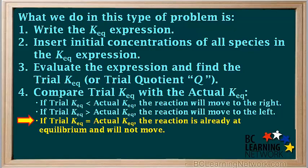Now there's a small chance that when some reactants and some products are added to a reaction vessel, the initial ratio of products to reactants, or trial Keq, will be exactly equal to the actual Keq value. In this case, the system is already at equilibrium, and the reaction will neither move to the right nor to the left.